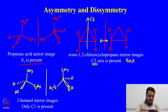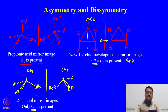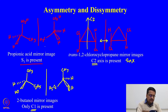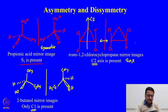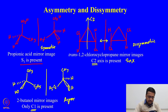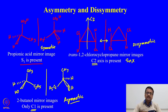The third case is 2-butanol and its mirror image. This particular molecule has only C1 — there is no Sn and there is no other symmetry element like C2 or C3. These two mirror images are non-superimposable. Therefore, this molecule is a chiral compound and is optically active. So: propionic acid is symmetric, trans-1,2-dichlorocyclopropane is disymmetric, and 2-butanol can be termed asymmetric.